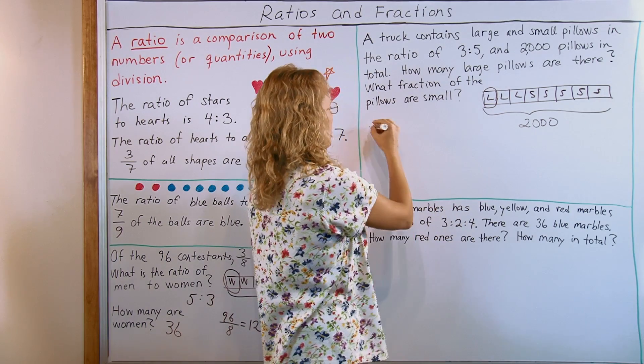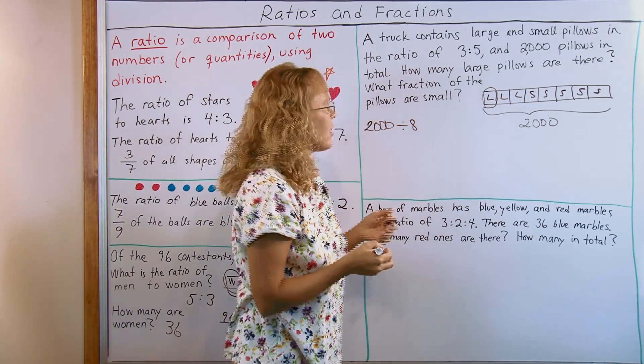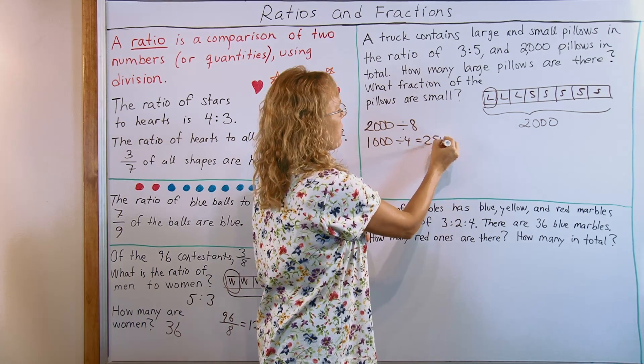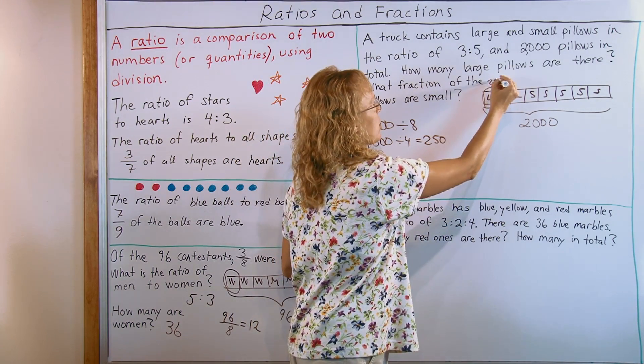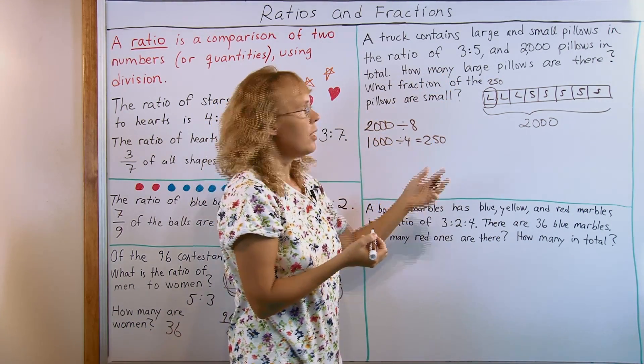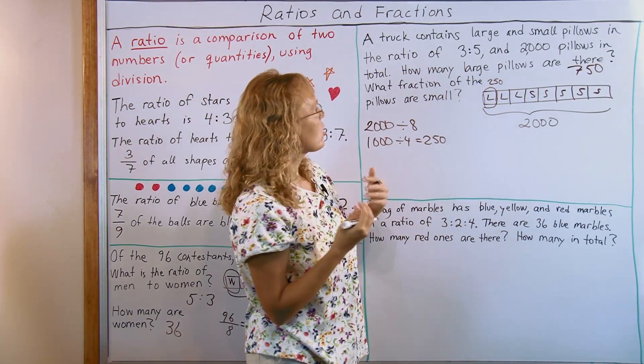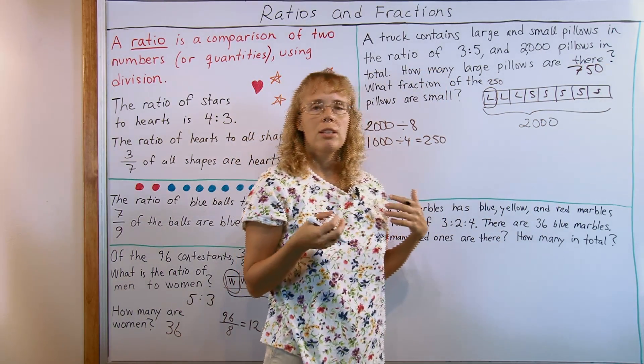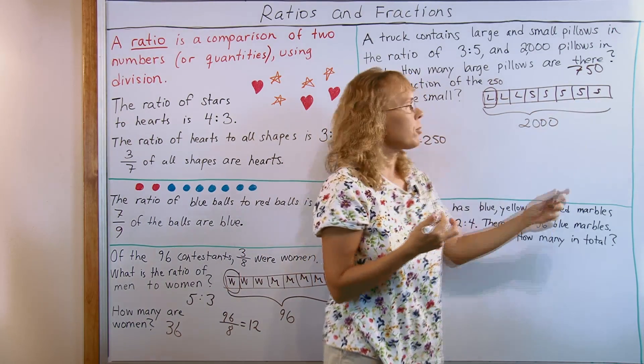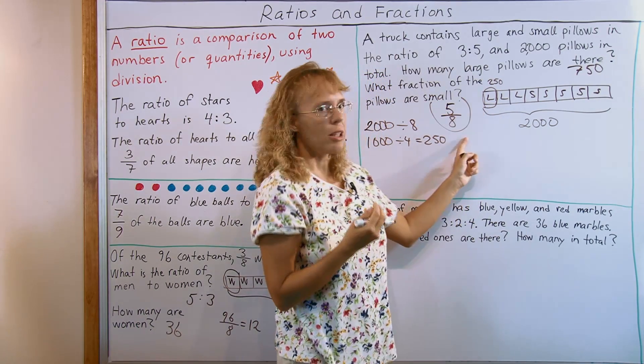3 parts are large and the rest are small pillows. How many large pillows are there? All I need to do is find how much is in this one block. It is 1 eighth of 2000. 2000 divided by 8, that's the same problem as 1000 divided by 4, which is 250. So one of these blocks is 250. And how many large pillows are there? There are three blocks of them, so my answer is 750 large pillows. And what fraction of the pillows are small? I have 5 parts of small pillows and 8 parts in total, so that's the answer: 5 eighths of the pillows are small.